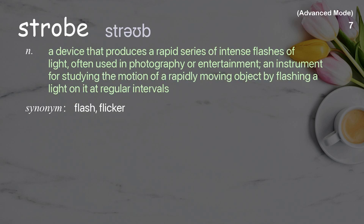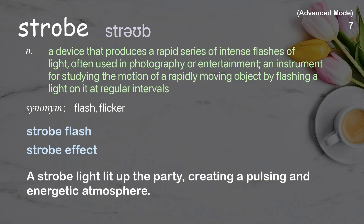Strobe: A device that produces a rapid series of intense flashes of light, often used in photography or entertainment; an instrument for studying the motion of a rapidly moving object by flashing a light on it at regular intervals. Examples: Strobe flash. Strobe effect. A strobe light lit up the party, creating a pulsing and energetic atmosphere.